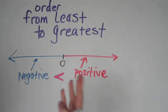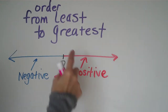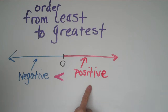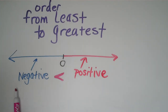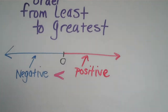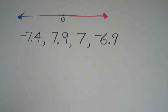If they ask for greatest to least, it's the opposite — the positives come first. But for this video, we're going to order from least to greatest, so we'll always have our negatives first followed by our positive numbers.